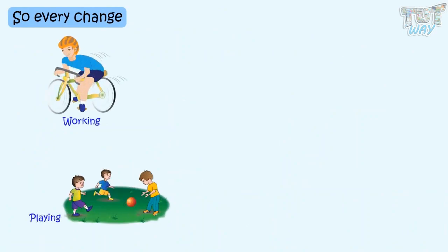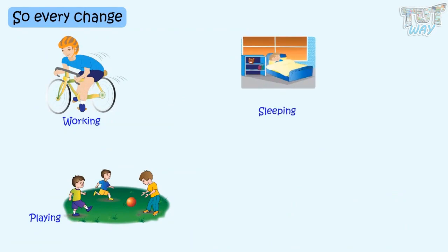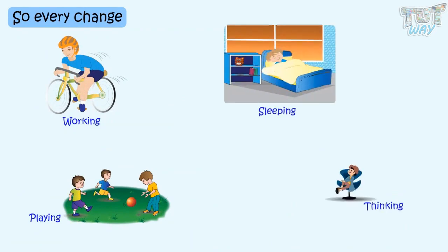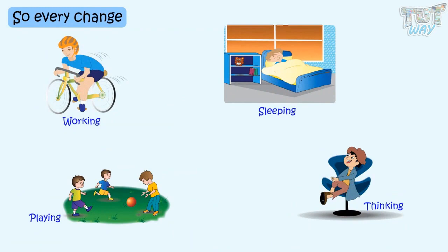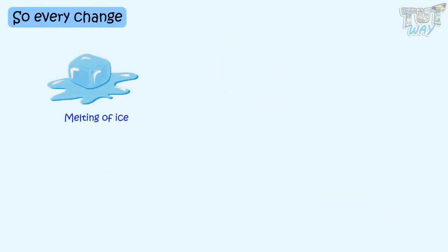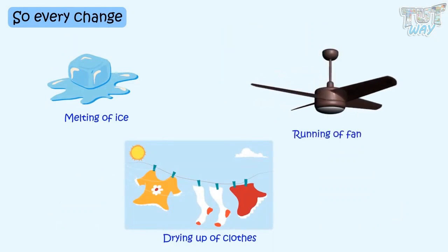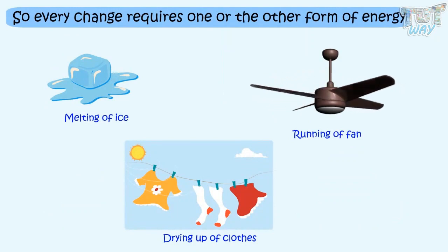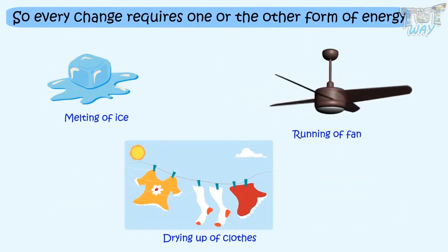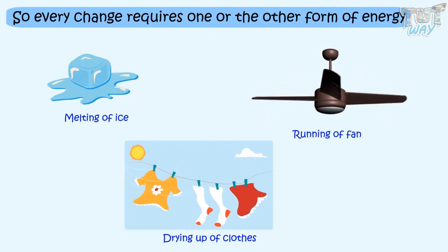Our clothes are dried up either using the heat energy from the sun or wind, or we dry them in machines using electrical energy. So every change — working, playing, sleeping, thinking, or any physical change like melting of ice or running a fan — all requires one or the other form of energy. Now let's answer some questions.